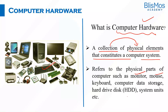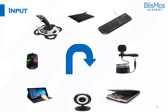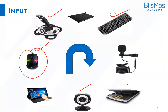Now let us understand what are the important components within computer hardware. First and foremost are input devices. Input devices are pieces of equipment used to provide data and control signals to information processing systems. It can be a mouse or a keyboard, which will provide data or a signal to the computer. Within input devices we have keyboard, joystick, mouse, webcamera, scanner, touchpads, and pen tablets.